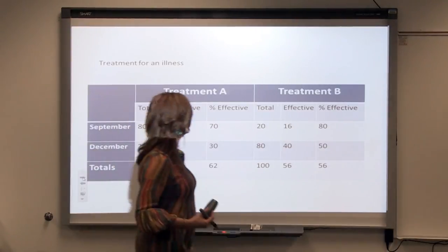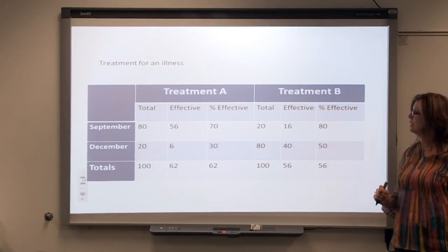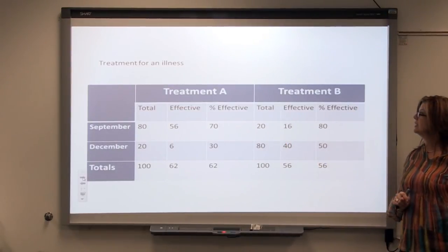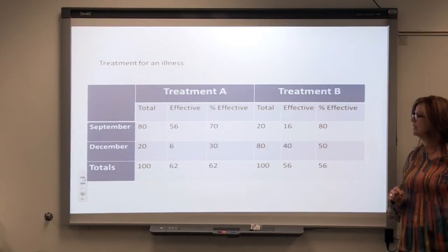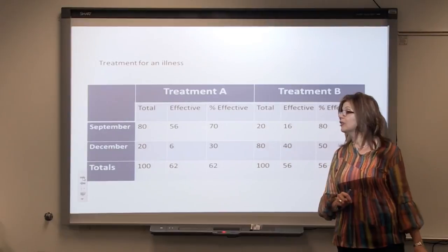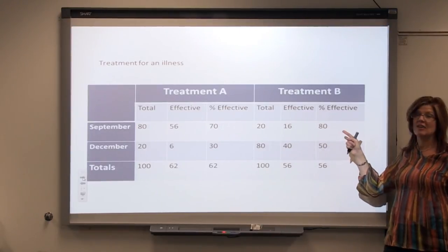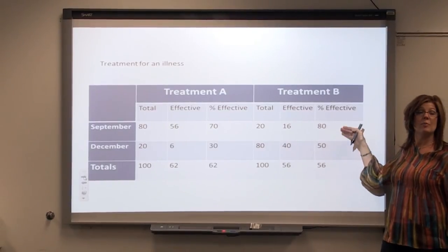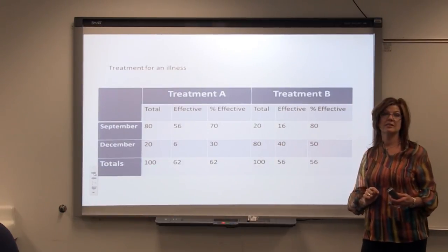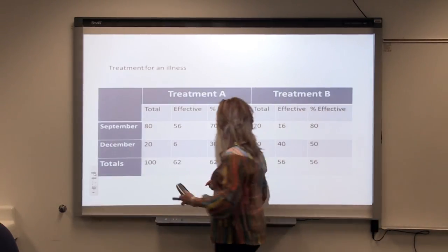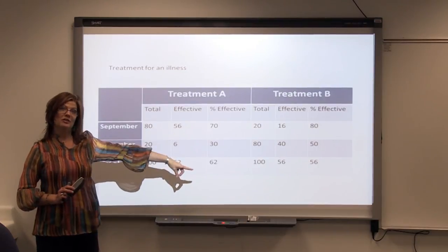But Drug Company B is going to argue differently. They'll say, look — in September, 80% of our patients were effectively treated, where only 70% of Drug Company A's patients were treated effectively. And then look at our December data: 50% of our patients were treated effectively, whereas in December Drug Company A only had 30% treated effectively. So if you look at September and December separately, Drug Company B will show you that data and say their treatment is much more effective. But Drug Company A will point to the bottom line: 62% of their patients were treated effectively, versus only 56% of Drug Company B's patients.